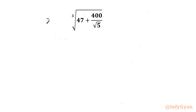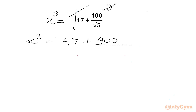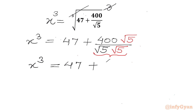Let us consider this expression equal to x first. Now I will consider cubing both sides, so power 3 on both sides. Cube root and cube will cancel. We will write x cubed as 47 plus 400 over square root 5. Now we will use rationalization of the denominator, multiplying numerator and denominator by square root 5. Square root 5 times square root 5 gives us 5. So we can write x cubed equal to 47 plus 400 square root 5 over 5.